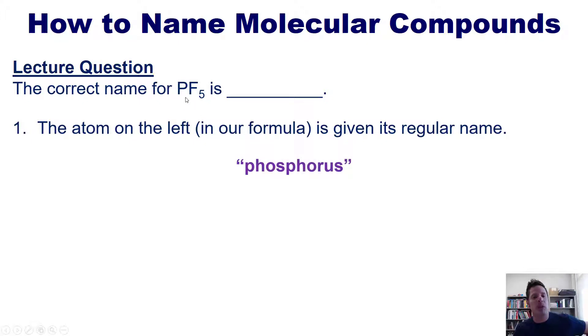Now, there is an implied one right here, so anytime you don't have a subscript number here, it's an implied one. However, we need to remember that we never use the prefix mono for the leftmost element, even if there is only one of that element in the formula. So we're done with step one.